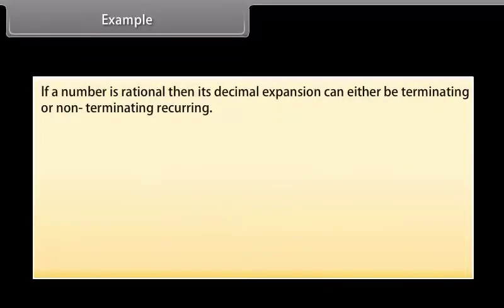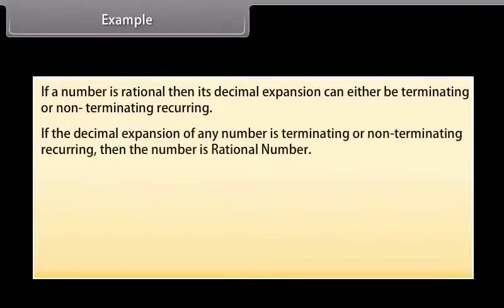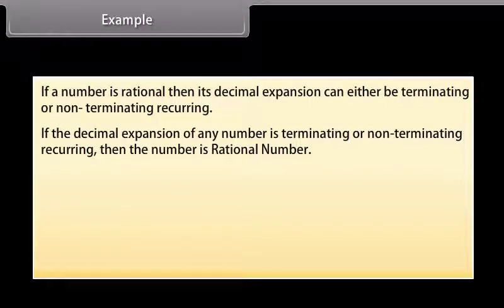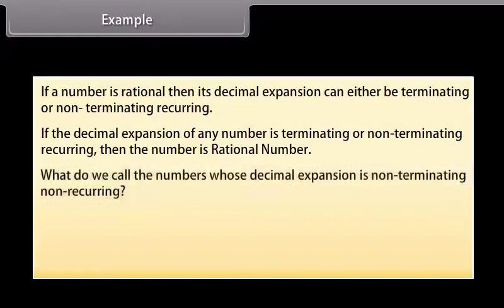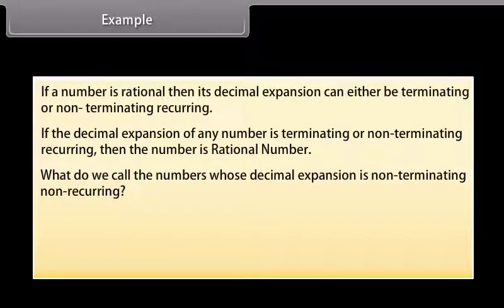Hence, if a number is rational, then its decimal expansion can either be terminating or non-terminating recurring. In other words, if the decimal expansion of any number is terminating or non-terminating recurring, then the number is a rational number. And numbers whose decimal expansion is non-terminating non-recurring are irrational numbers.